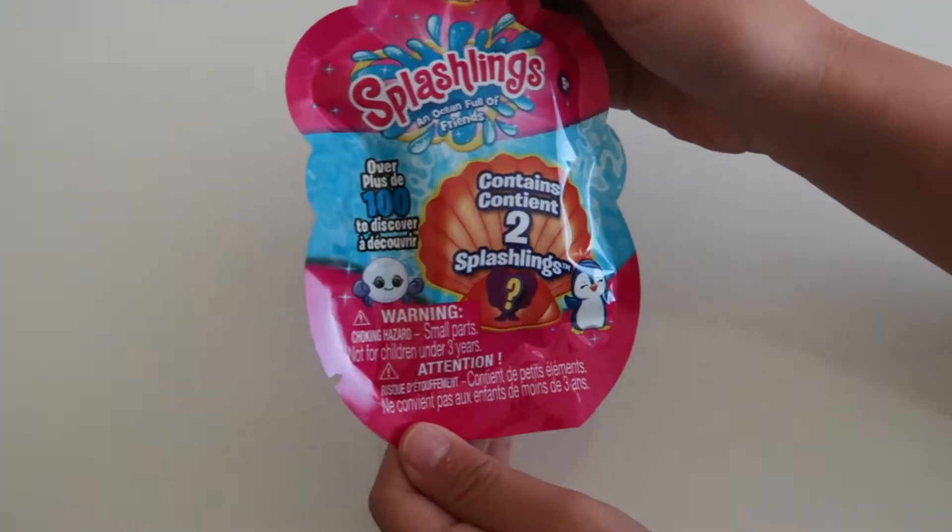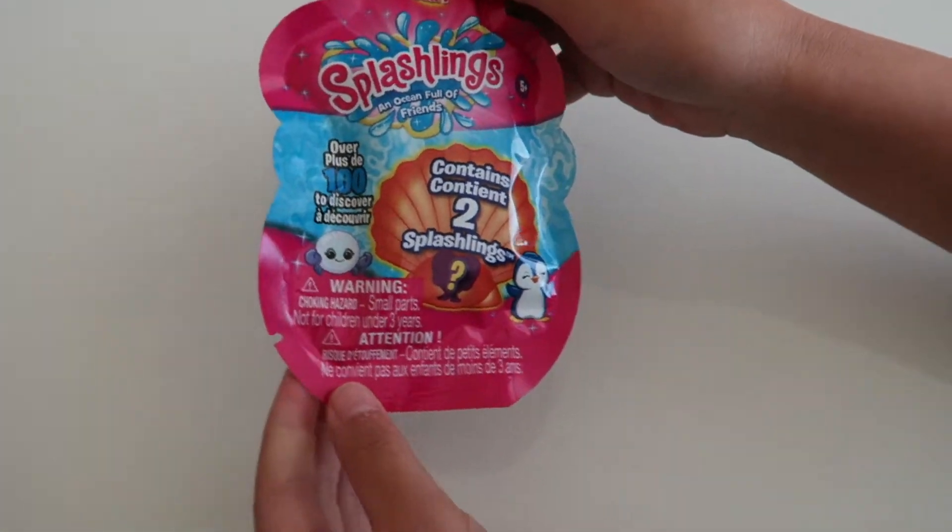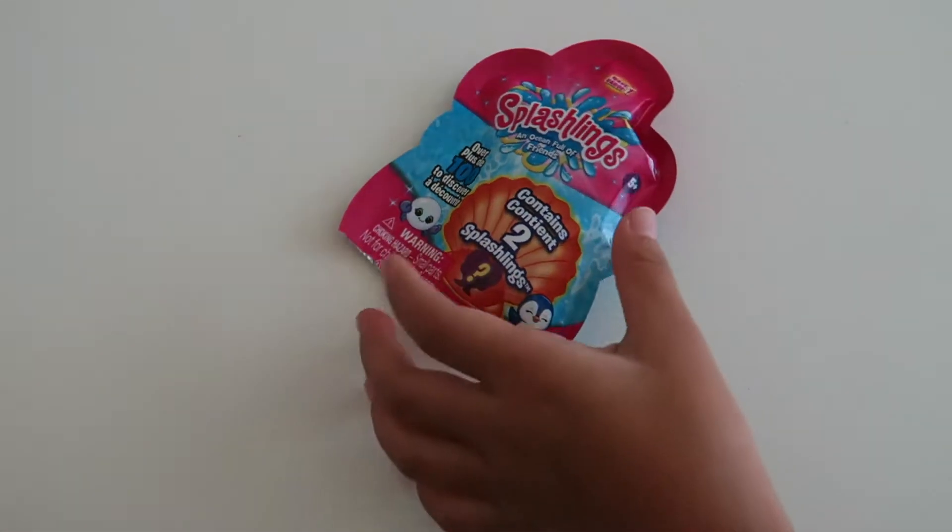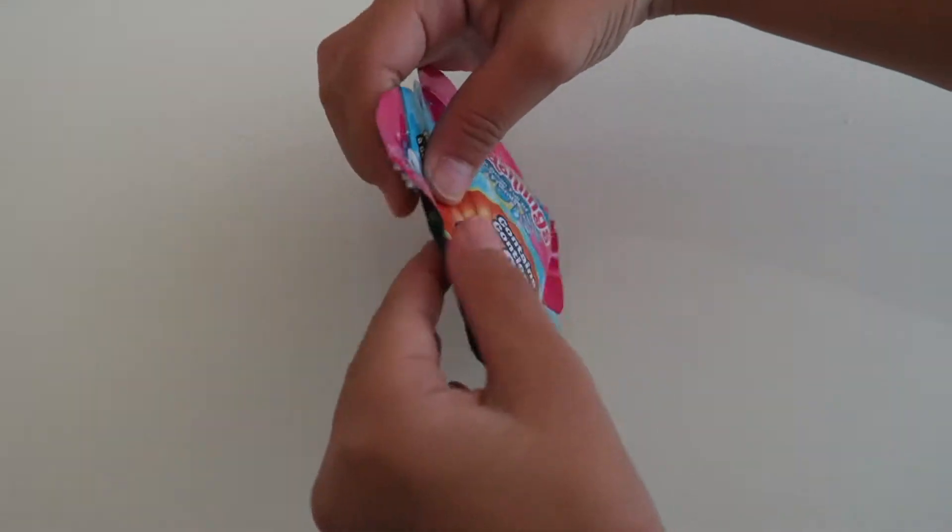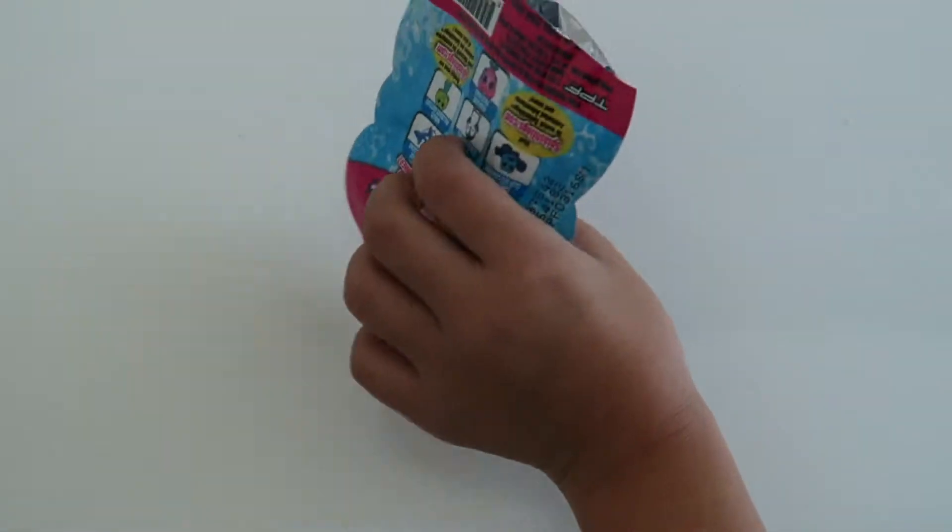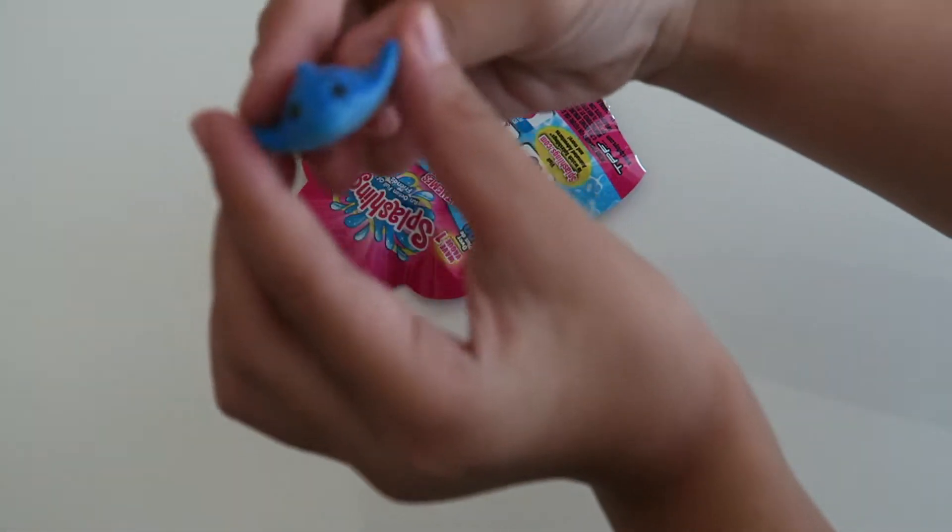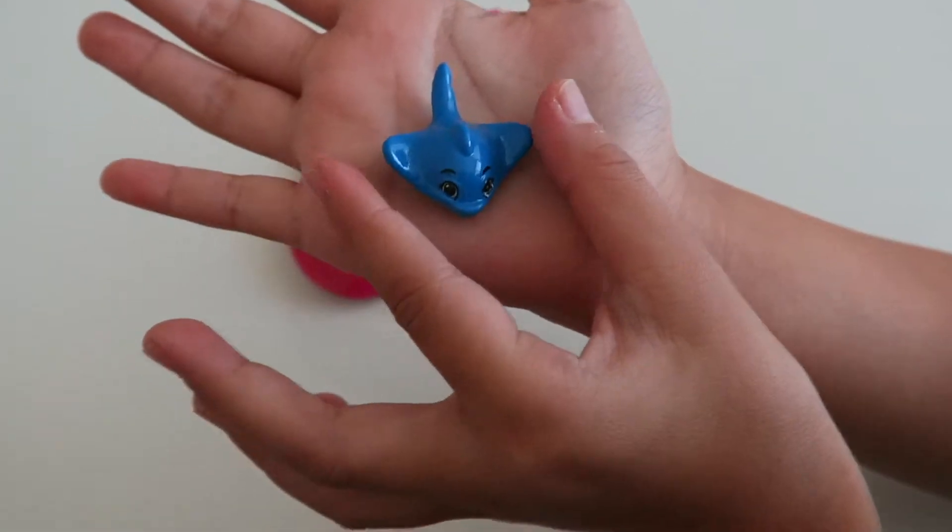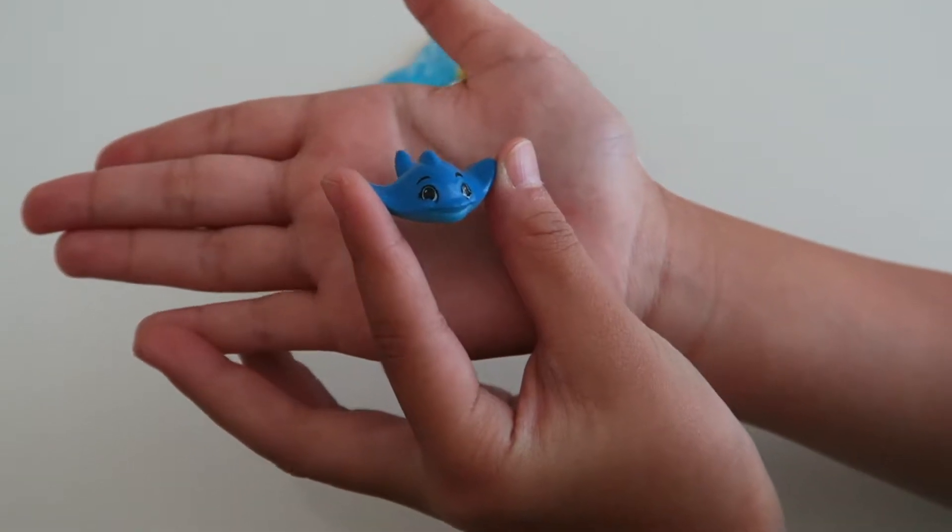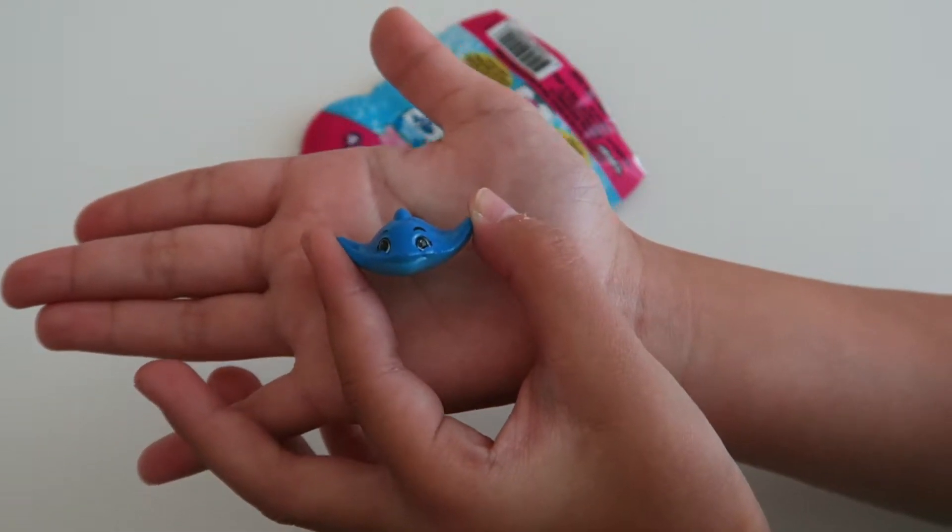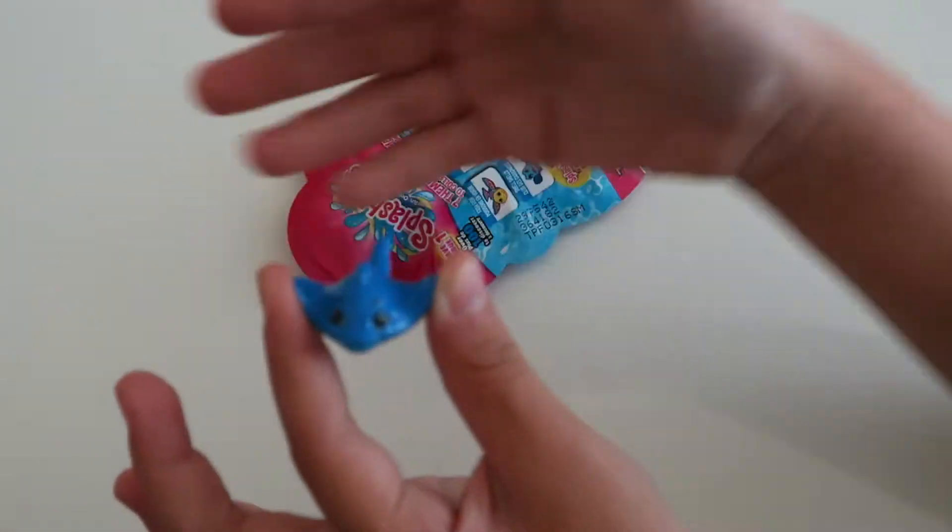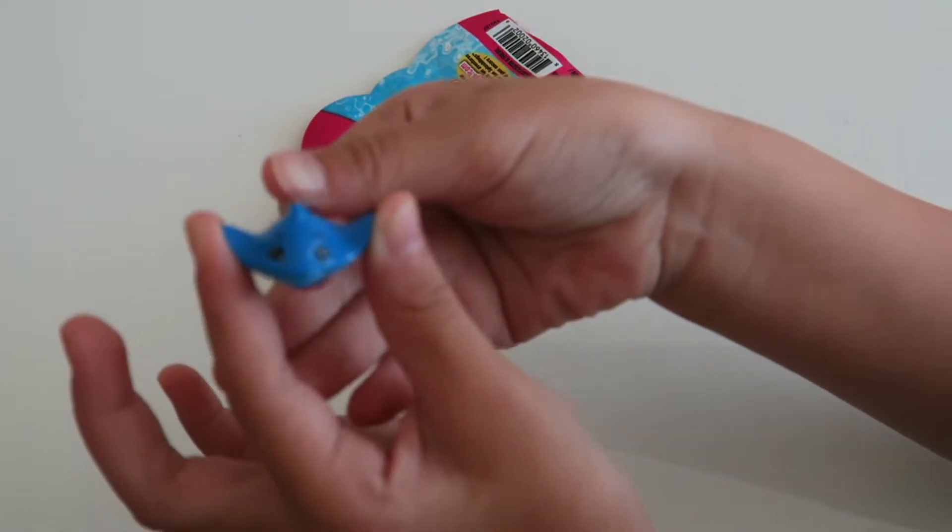I'm going to be opening up the first Splashlings blind bag. Let's see who we get. Do you guys see who it is? I think I do. The first one is like this little ray. He is really cute. His name is Clyde Glide and he is a rayer. I'm so excited. We got a rayer. And he is from the Wiggles section.